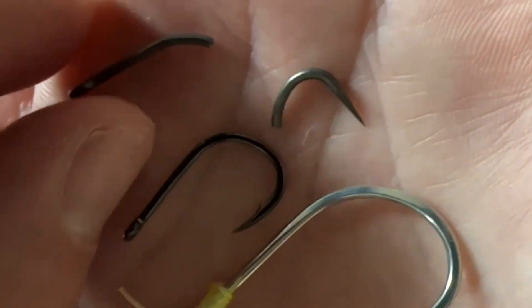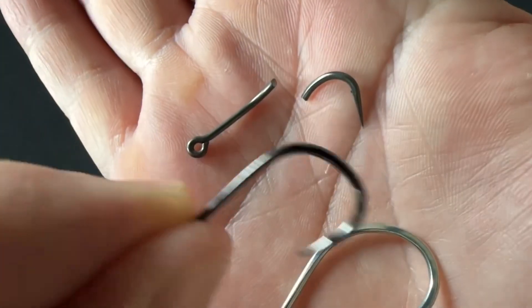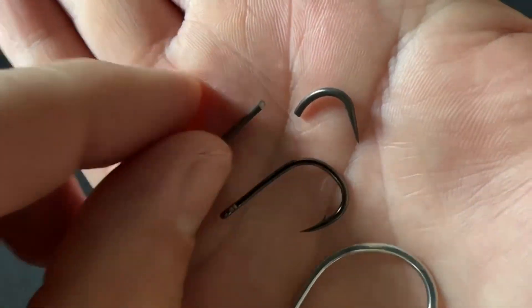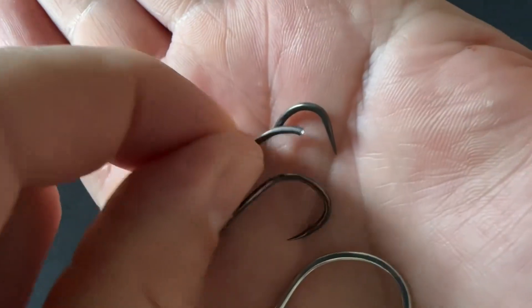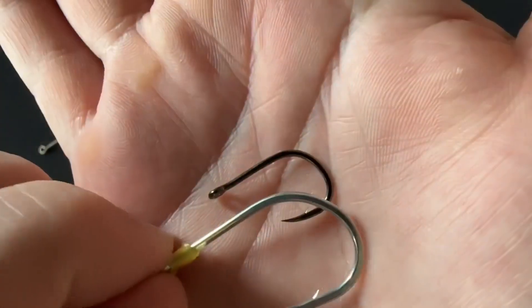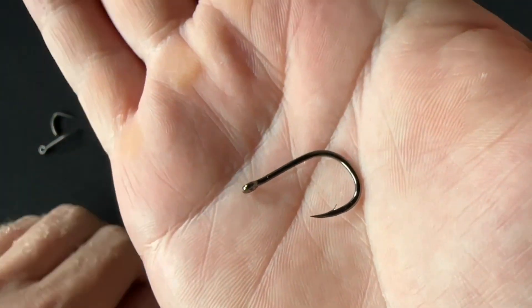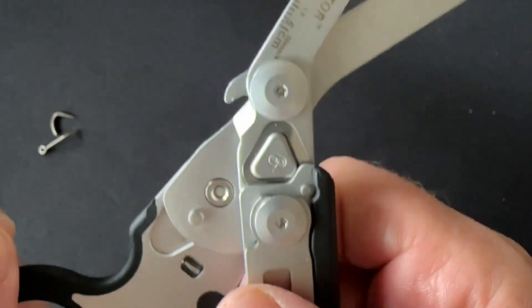Now, the second hook that you're looking at here is the same dimension as the first one. However, this is a high quality steel Mustad hook. It's a tempered steel hook.